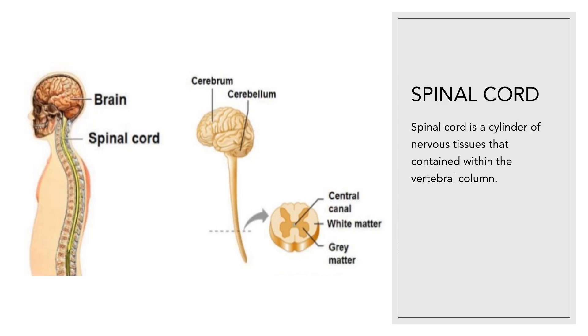What is the spinal cord? As you can see from the diagram, the spinal cord is a cylinder of nervous tissue that is contained within the vertebral column.